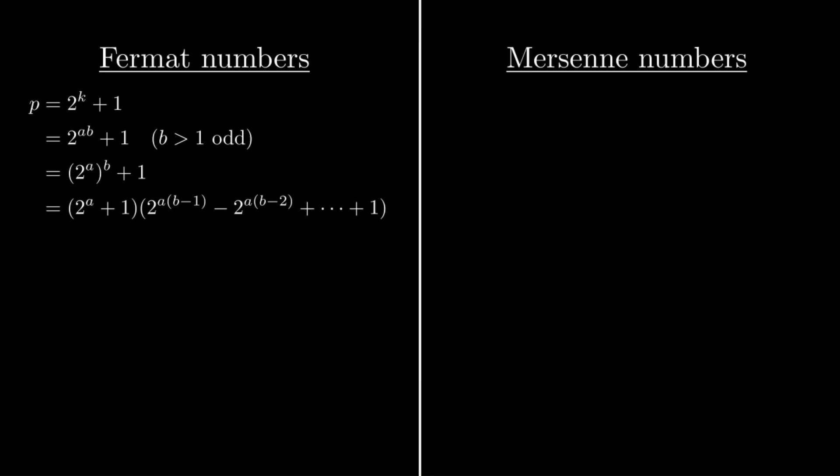But the important part is that it can't be prime. So, for example, if a is 4 and b is 7, we find that 2^28 + 1 is divisible by 17. So what that means is that if we're looking for primes that are 1 more than a power of 2, the only exponents we should check are themselves the powers of 2.